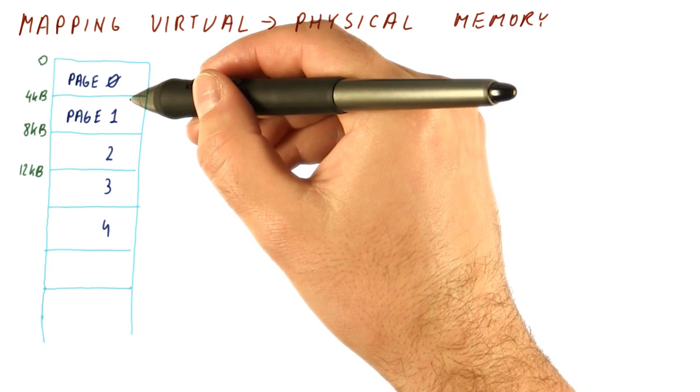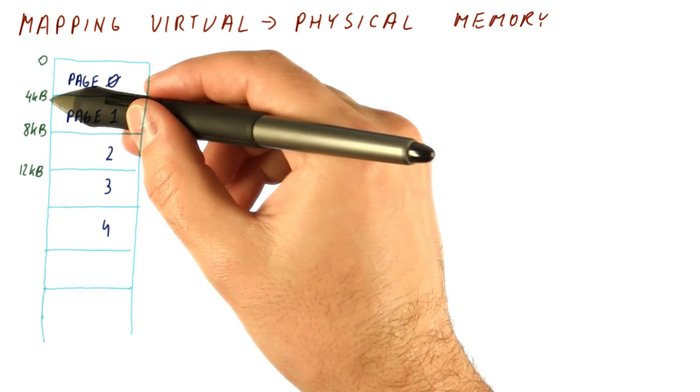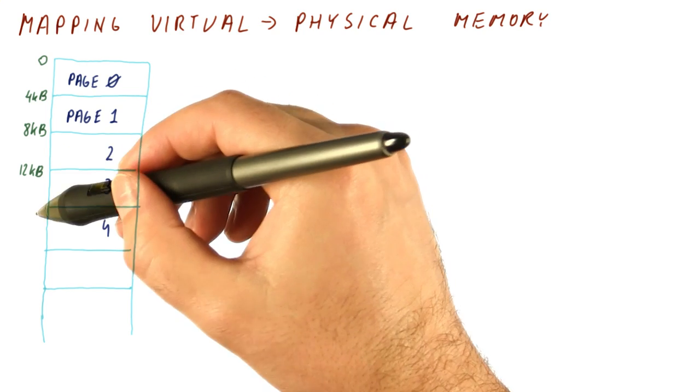Note that each page is aligned to the page size. So the page, for example, is four kilobytes, and it begins at a four kilobyte boundary.